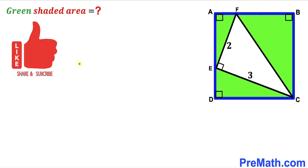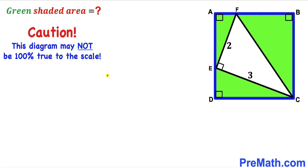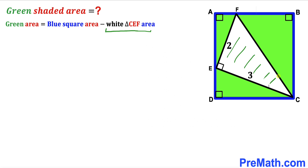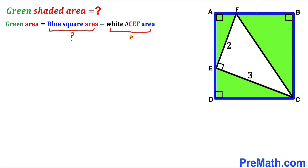Please don't forget to give a thumbs up and subscribe, and keep in mind that this figure may not be 100% true to scale. Let's get started. We can observe that the green shaded region area equals the area of the whole blue square ABCD minus the area of the white triangle CEF.